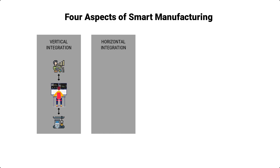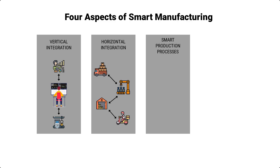The second aspect is horizontal integration. This is the integration of all the systems involved in your manufacturing supply chain, from procurement to shipping, extending well beyond individual factories or manufacturing enterprises. Next, there is the aspect of smart production processes. This is the integration of the various steps or processes involved in a manufacturing business life cycle, from the production design phase to retirement, and also the definition of the capabilities of the production processes.